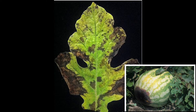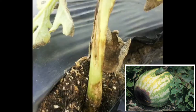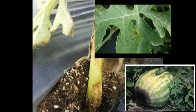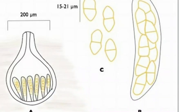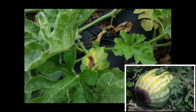Watermelon and muskmelon are the two most popular crops for farmers in winter all over India and the entire world. These melon crops belong to the family Cucurbitaceae — it is a creeper crop and includes crops like gourds, bitter gourd, ash gourd, and cucumbers. These melon crops are prone to many pests throughout their life.